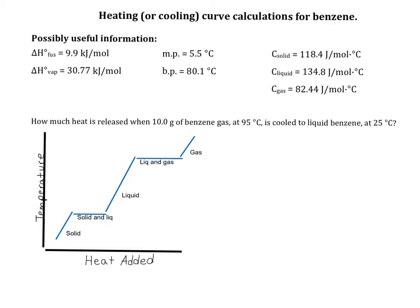This problem will take us from benzene gas at 95 degrees C, somewhere in this region, down to liquid benzene at 25 degrees C. I'll mark the starting and ending points on the curve. By mapping out the problem, we can see that we'll need to carry out this calculation in three steps.